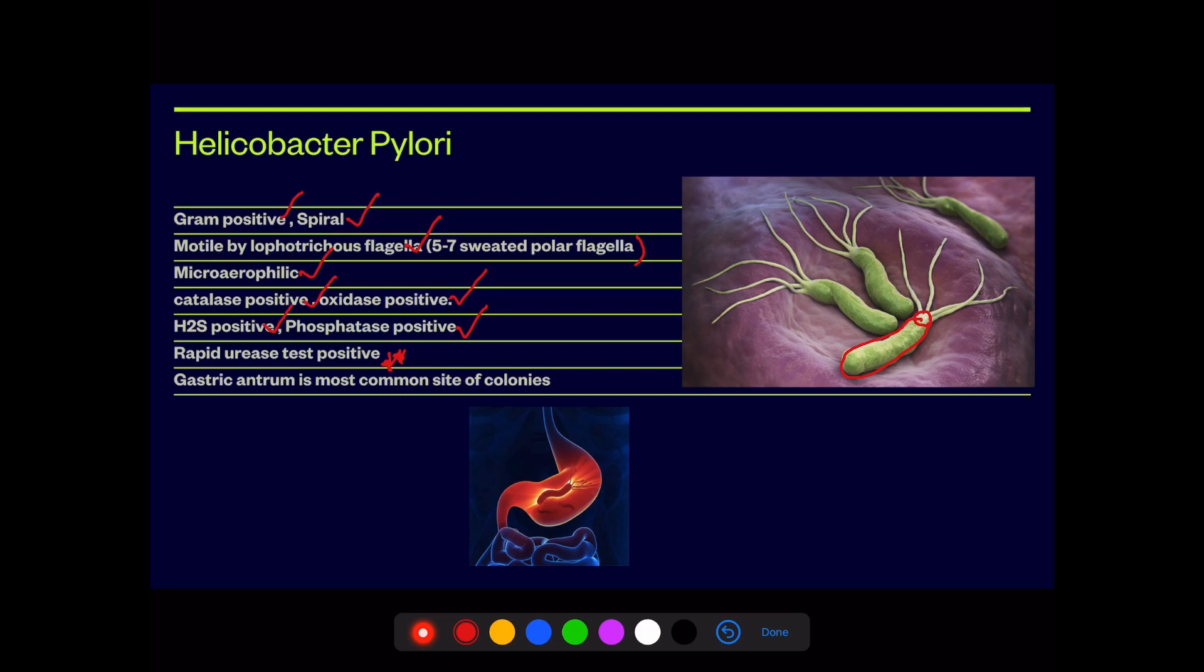Rapid urease test, which is very unique for this particular bacteria. There are few other bacteria which are mainly concerned with this rapid urease test, but out of which the most powerful is H. pylori.